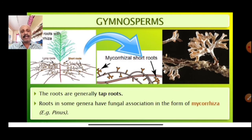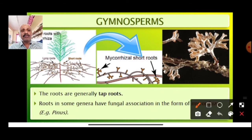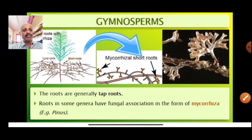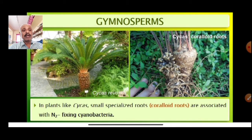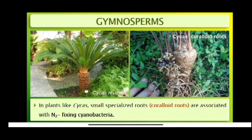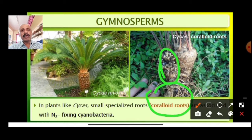Mycorrhizal roots — the fungal association with roots. Pinus is the best example for this kind of mycorrhizal root association. In plants like Cycas there are small specialized roots called coraloid roots. These coraloid roots are associated with cyanobacteria for the fixation of nitrogen.